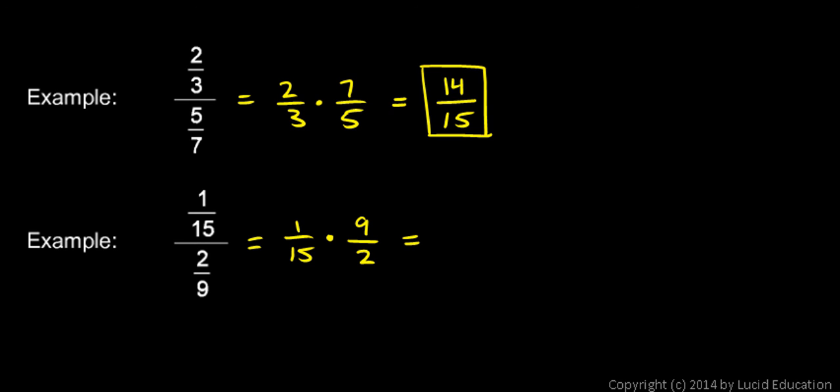And we can simplify this a little bit. The 15 and the 9 are both divisible by 3, so let's divide each of those by 3. 15 divided by 3 is 5, and 9 divided by 3 is 3.